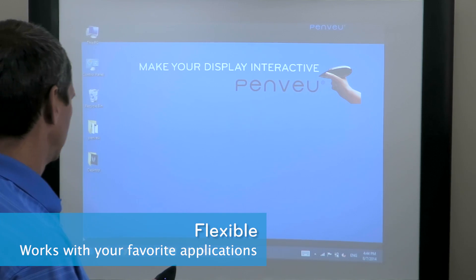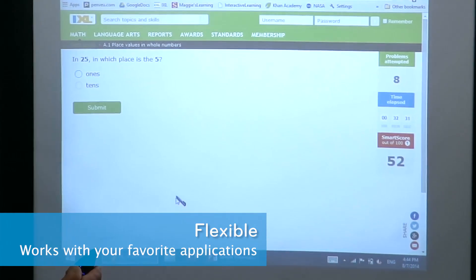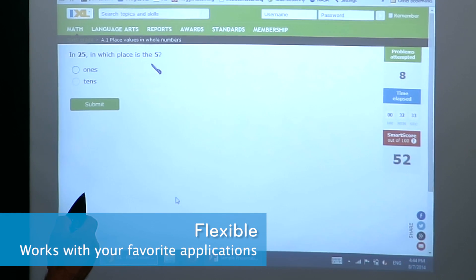For example, we'll come in and open up iExcel, and we'll switch over to pen mode. We're going to underline the question here. We'll switch to highlighter and mark the number that it's talking about. And then we'll come to complete our answer and submit it. Selecting the ones and hit submit.